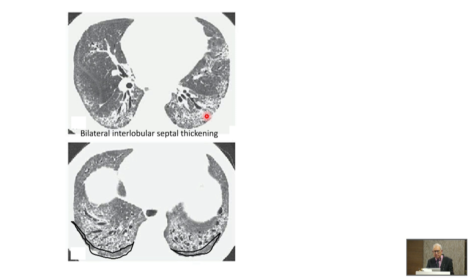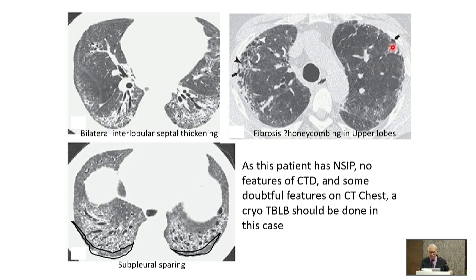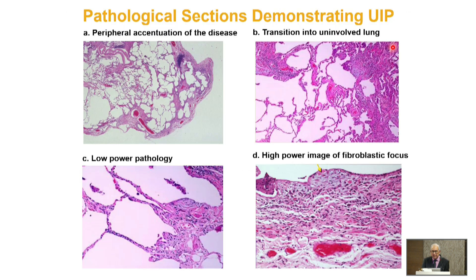The CT scan showed peripheral sparing, interstitial shadows, ground-glass opacity, microcystic changes, traction bronchiectasis, fibrosis, and a little honeycombing. You could say this patient has NSIP — and we will ask the radiology faculty whether he agrees.